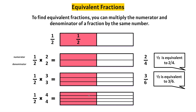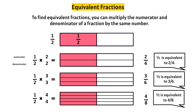And the numerator will be one, two, three, four — four-eighths. So one-half times four on the top and four on the bottom makes four-eighths. One-half is equivalent to four-eighths. One times four is four and two times four is eight. All of these fractions hold the same value, so they are equivalent.